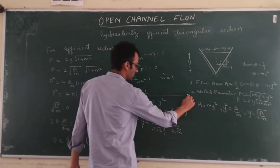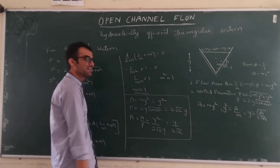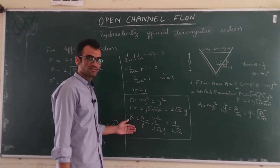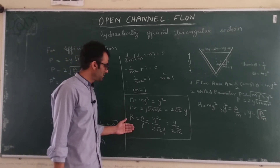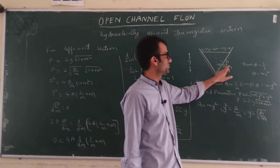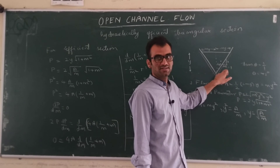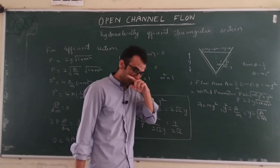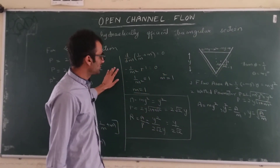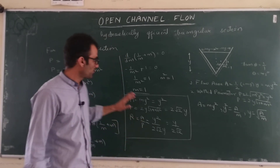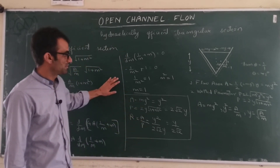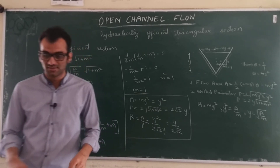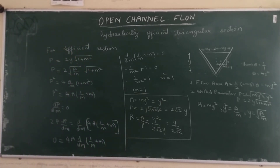These are the conditions for hydraulically efficient triangular sections. The key condition to remember is that M should equal 1, meaning the side slope is 1:1. In the next video, we will solve a problem on this triangular section. Thank you!